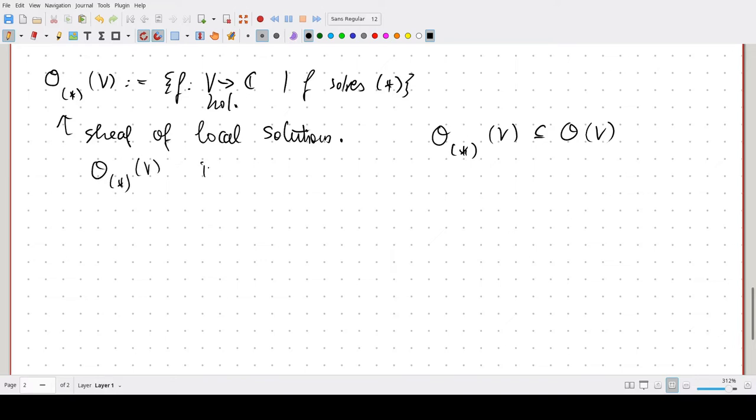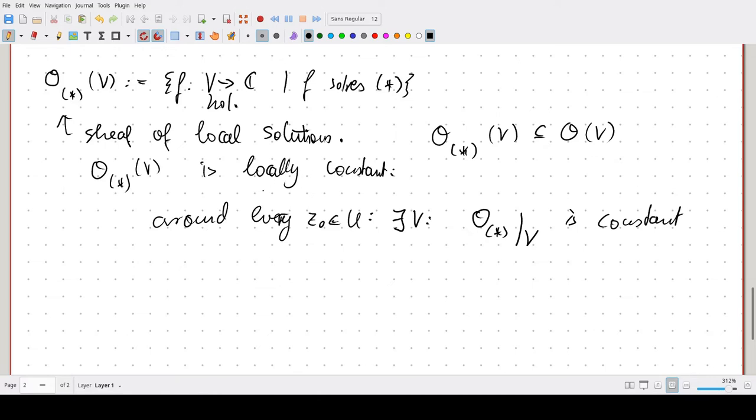Our sheaf of local solutions is locally constant. Which means that around every z₀ in U there is a neighborhood V, so that when we restrict our sheaf to subsets of V, it is a constant sheaf. So, locally constant.